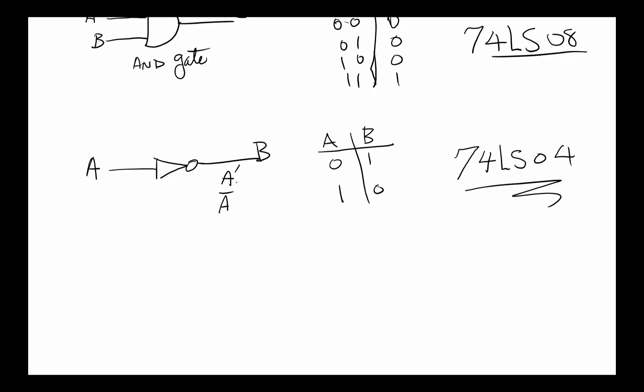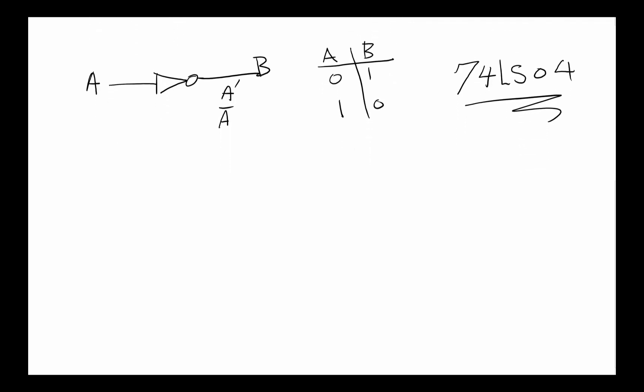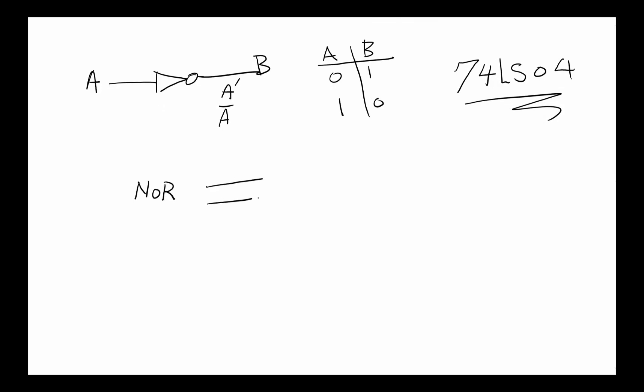There are some other gates we're not going to go through here, but I just wanted to mention them so you know. There is a gate called NOR which is an OR gate but we put a little bubble on it, which basically means an OR with a NOT attached to it.